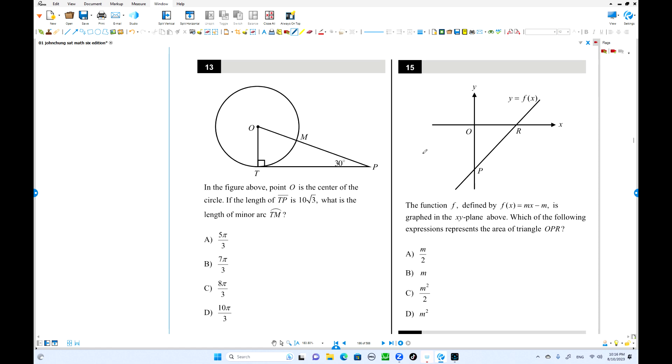Number 13. The length of TP. This length is 10 square root 3. What is the length of minor arc TM? You're going to find the length of this arc. This is 30, this is 60 degrees. So this is the special right triangle: 30, 60, 90. If this side is 2X, this side is half of that. This side is X times square root 3. But X times square root 3 is 10 square root 3. So X is 10. This is 10.